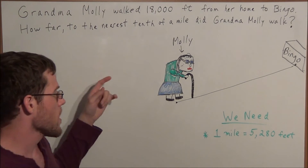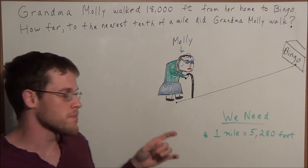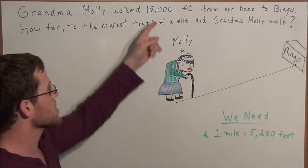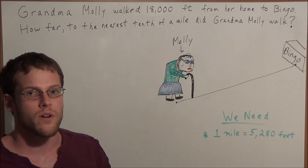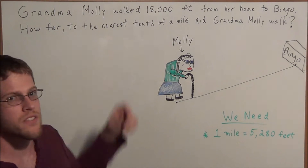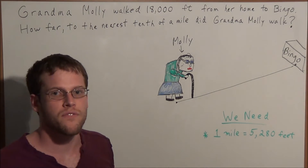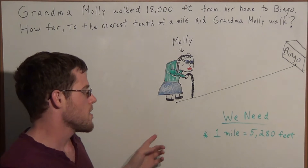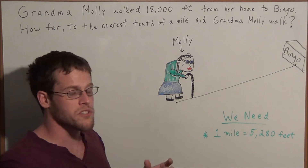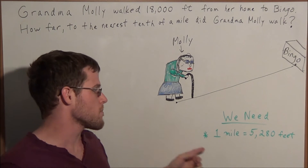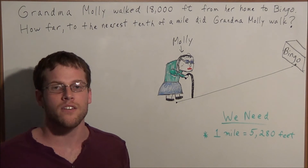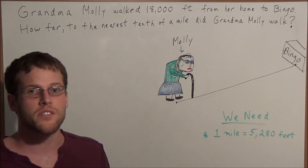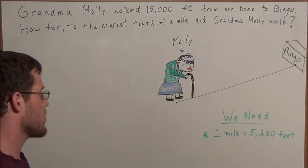So we have Grandma Molly, and she's walking from her home all the way to Bingo, which is 18,000 feet away. To find out how many miles there are in 18,000 feet, we need to think of what we do know. What we do know is that in one mile there are 5,280 feet. So we can use this information to set up a ratio.